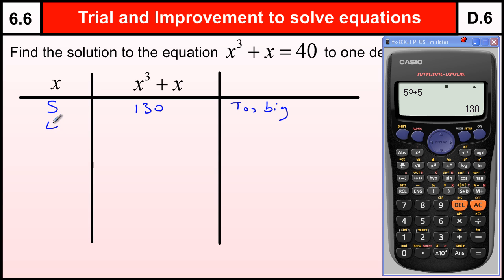So let's go down to 4. So 4 cubed, 4 cubed, plus 4, gives us 68, still too big. Okay, so let's try 3.